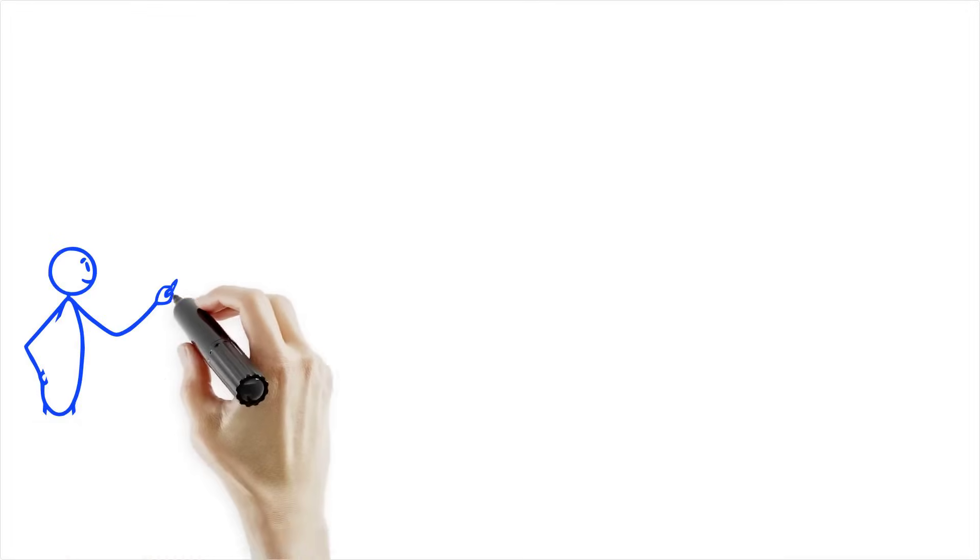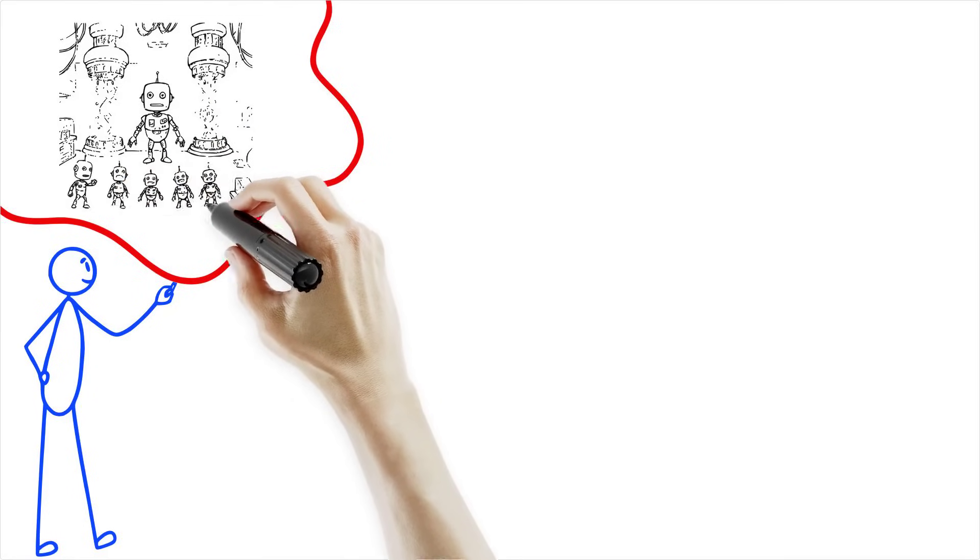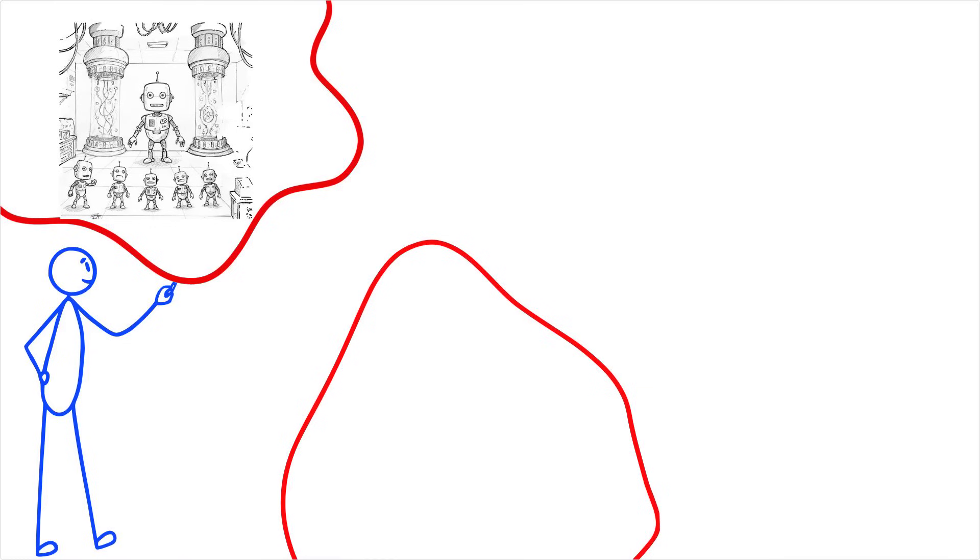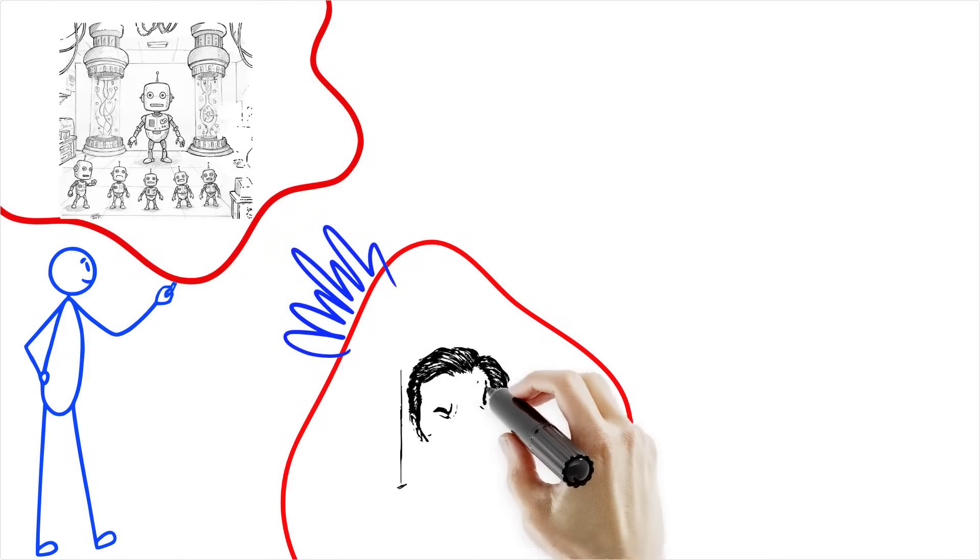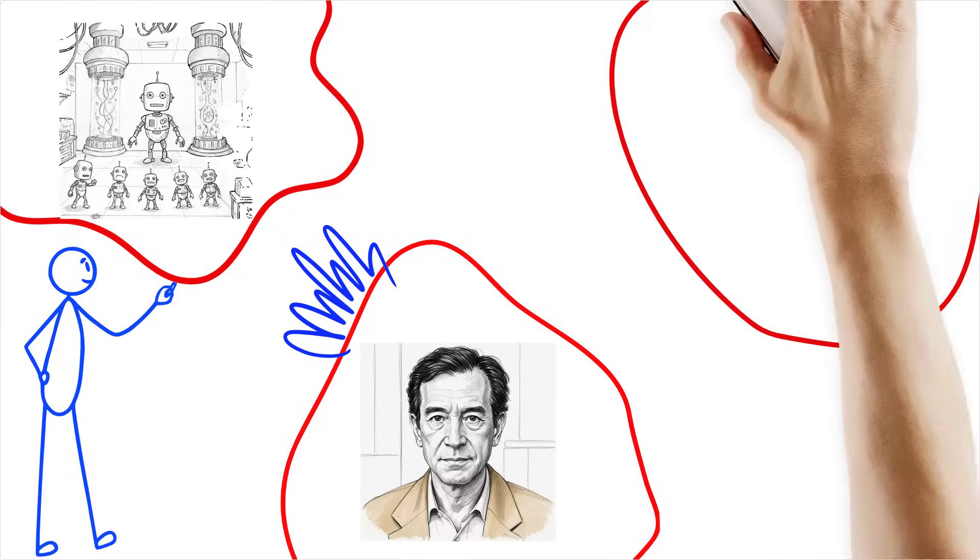Before you picture robotic clones replacing your Aunt Beatrice at the family reunion, let's talk reality. People like Gary Marcus and other AI experts say the Turing test is flawed. Fooling humans isn't the same as true understanding. It's like quoting Shakespeare to impress your date, but you never read the play.